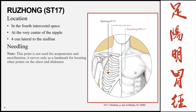Ruzhong, Stomach 17, is in the fourth intercostal space at the center of the nipple, 4 cun lateral to the midline. Note that the nipple is not always 4 cun lateral to the midline, which is why we don't use it as a measurement guide. This point is not needled — it is used primarily as a landmark for locating other points on the chest and abdomen, and only if the clavicle measurement and nipple measurement coincide.